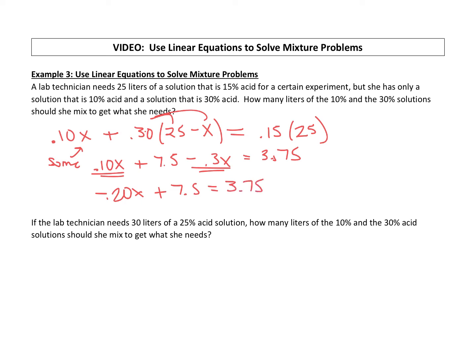0.10x times a negative 0.3x is a negative 0.20x plus 7.5 equals 3.75. Again, anything that's connected to our variable will go, so let's subtract the 7.5 from both sides. I'm going to bring that up here, hope you guys are reading smaller than me.